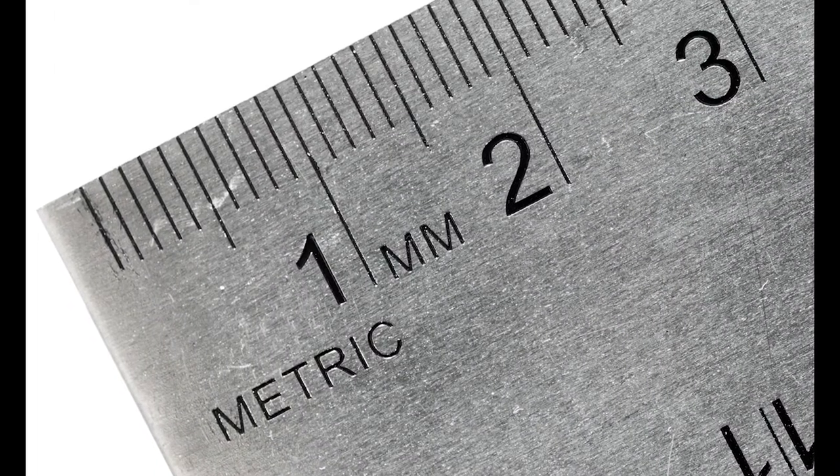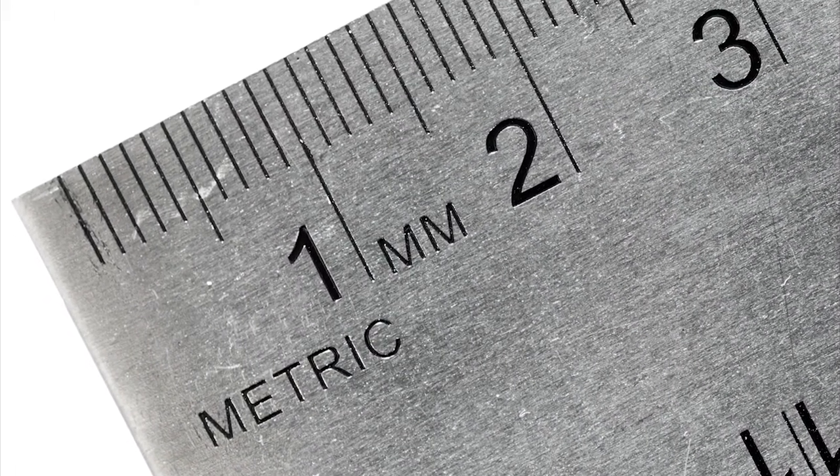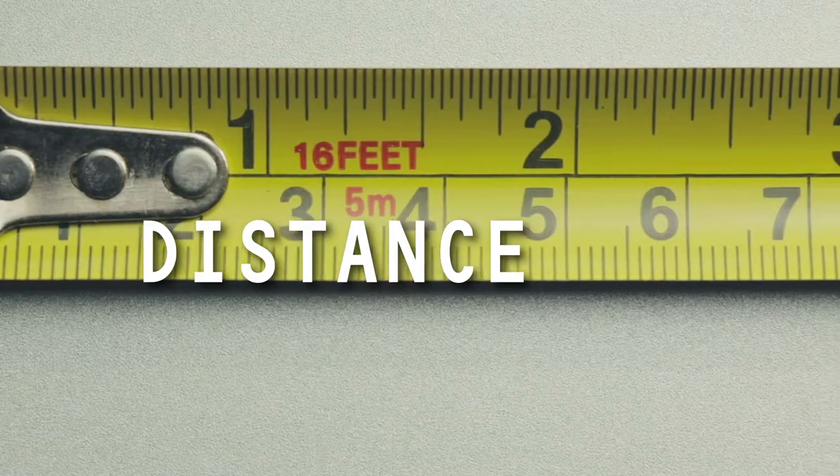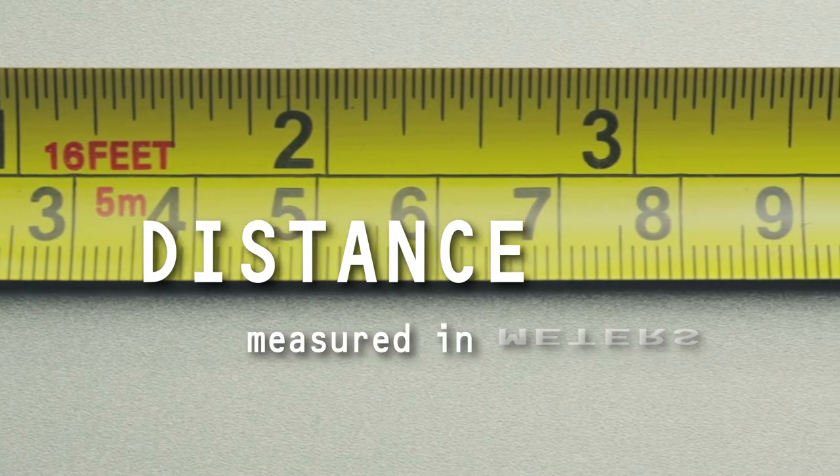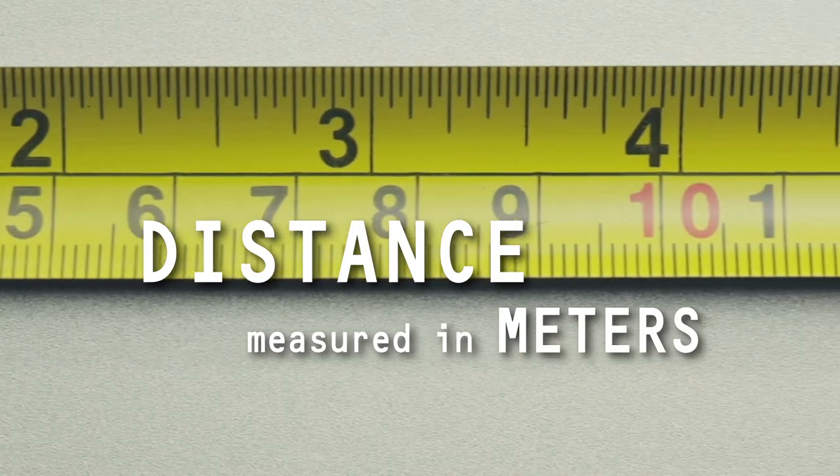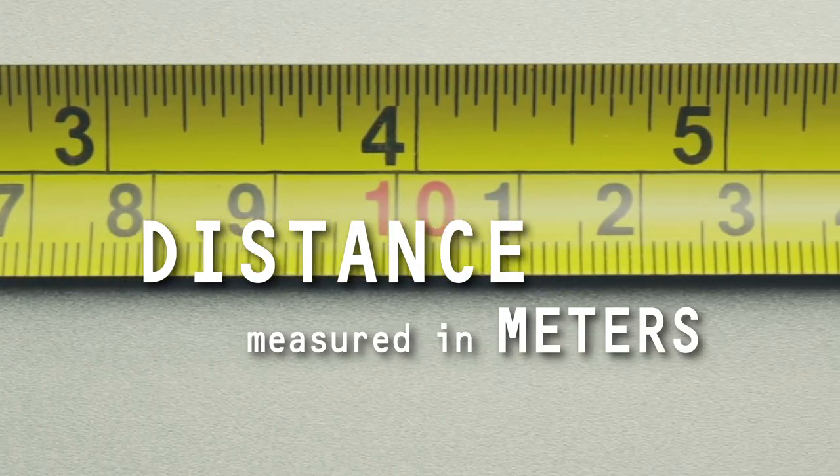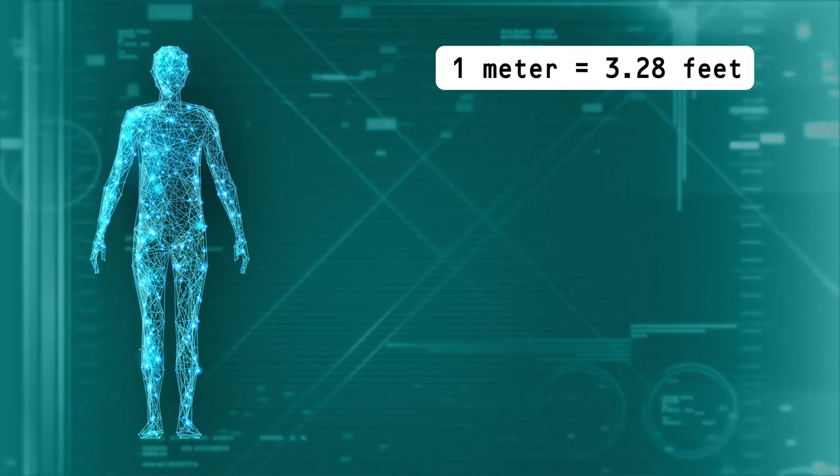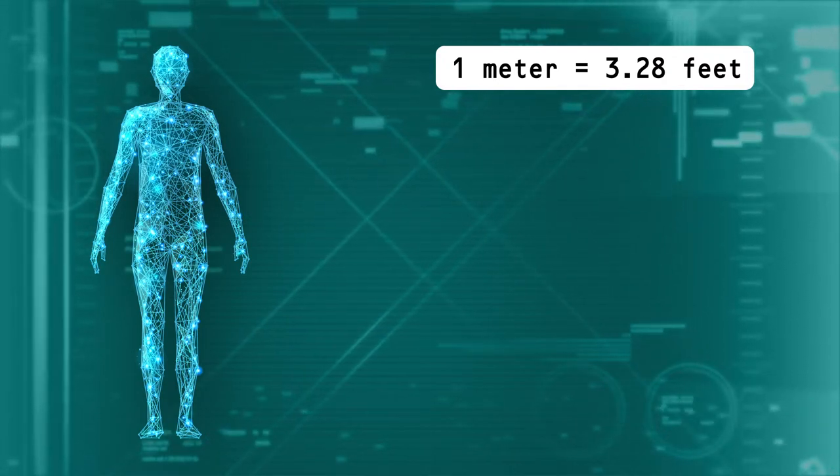In robotics, we use the metric system, also known as the SI units, for all of our measurements. You're probably used to measuring distances in feet. In the metric system, we use meters instead. A meter is 3.28 feet, so we can convert back and forth using this ratio.